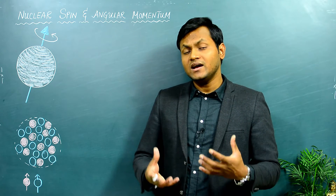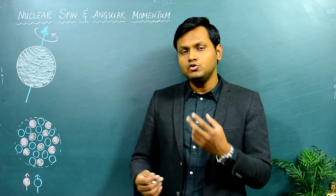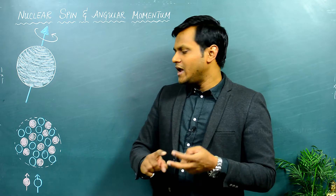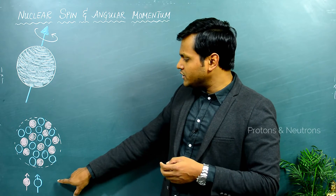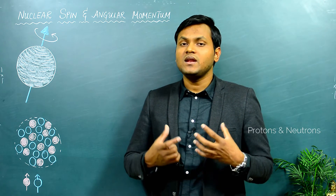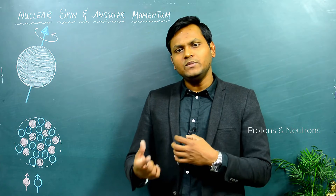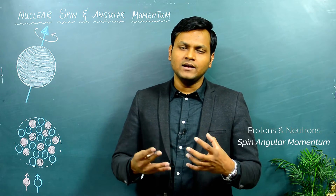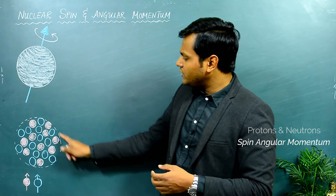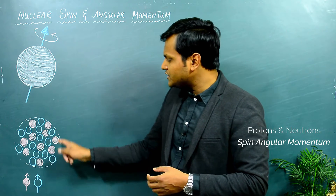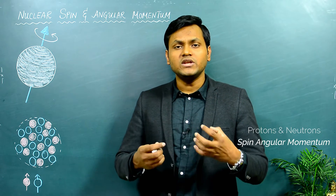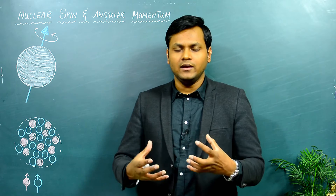The nucleus is basically a collection of two kinds of particles: protons and neutrons. These protons and neutrons are a kind of particle which have spin-half, meaning they have an intrinsic spin angular momentum of their own. So you can think of the nucleus as a collection of smaller nuclear particles which have their own intrinsic spin angular momentum.